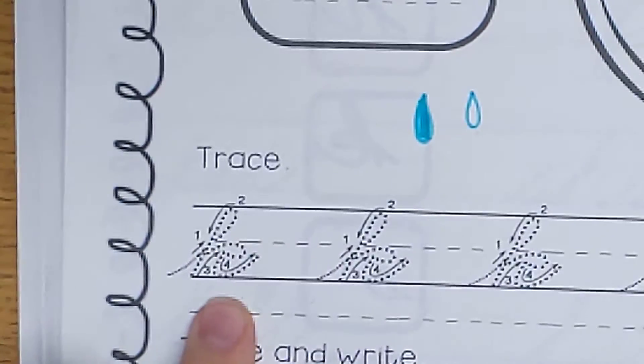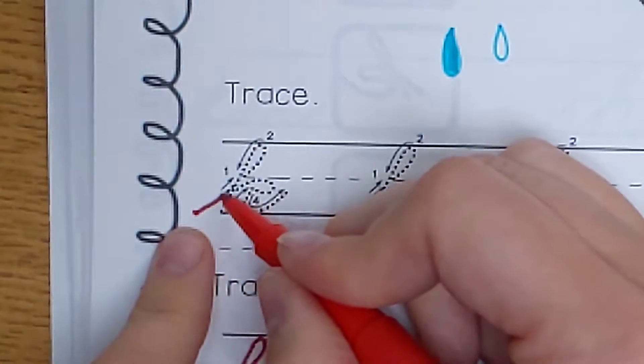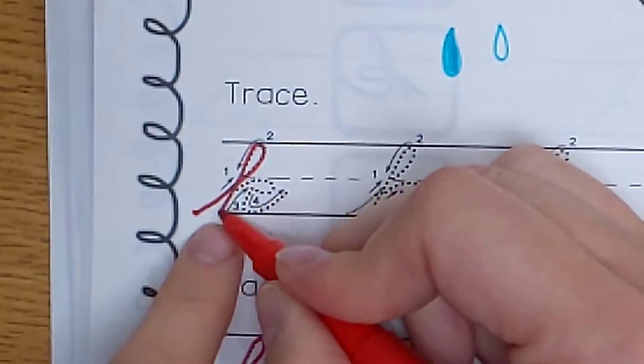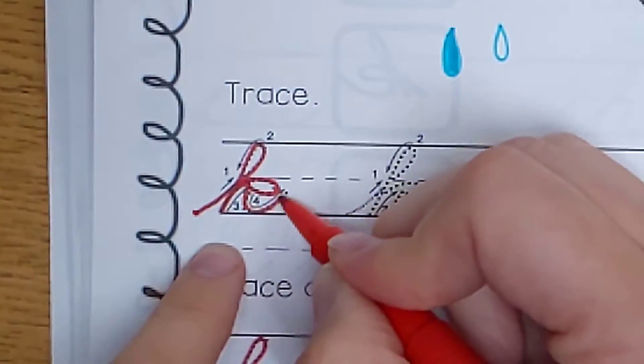Do one with me. Ready? Pick up your pencil. Start at the bottom. Curve up to the very top. Turn around. Go straight back down. Basketball bounce up. Go out. Make your little teardrop in. And goodbye.